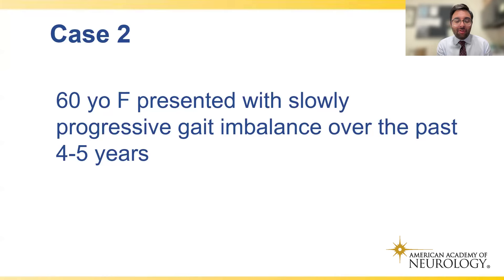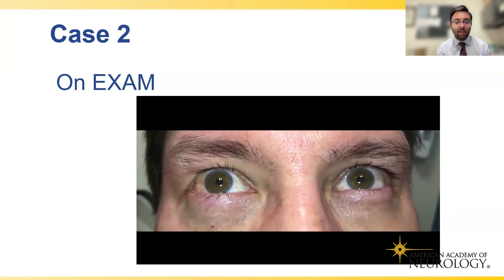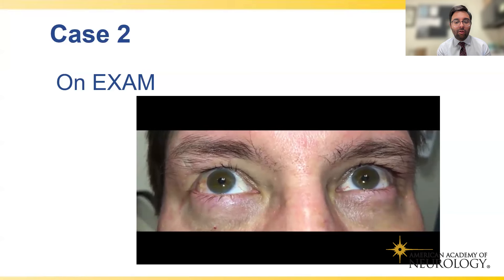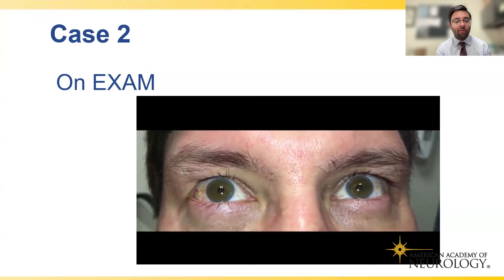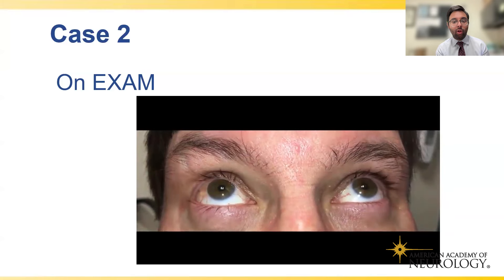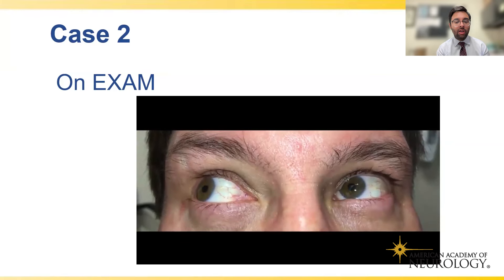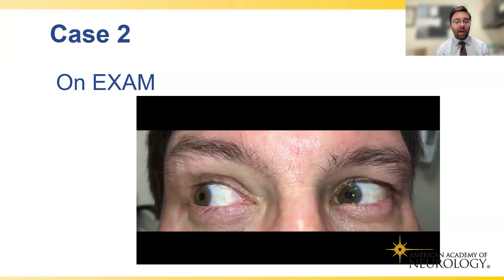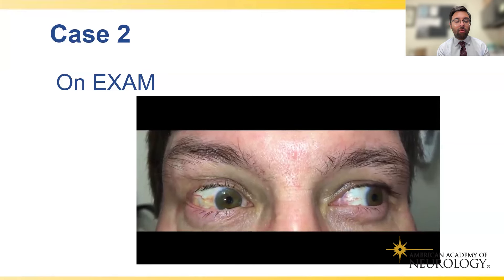Case 2 is a 60-year-old female with slowly progressive gait imbalance over four to five years. On exam, there is a rhythmic to-and-fro movement of the eyes — nystagmus. In jerk nystagmus, there are two phases: a slow pathologic phase where the eye drifts off target, and a fast corrective phase where the eye returns. What we see here is a fast phase directed downward — this is downbeat nystagmus.